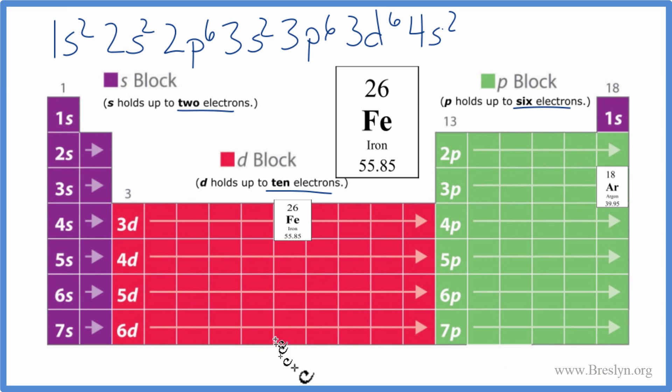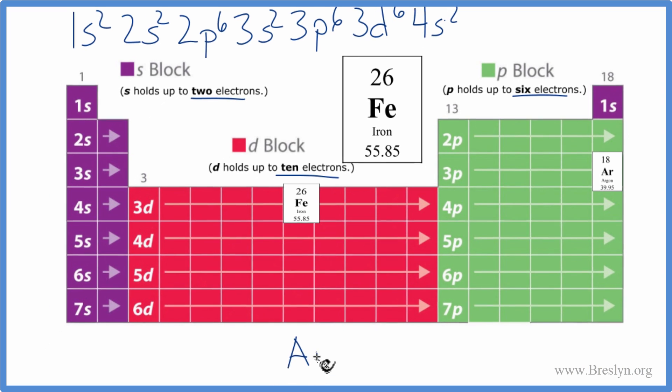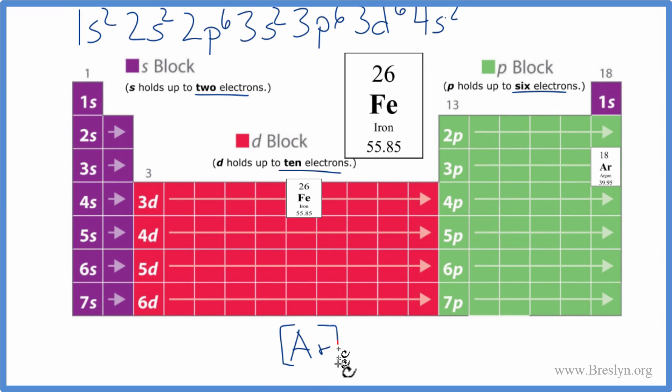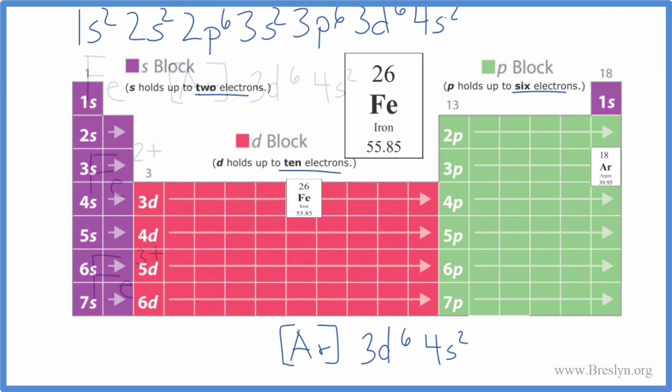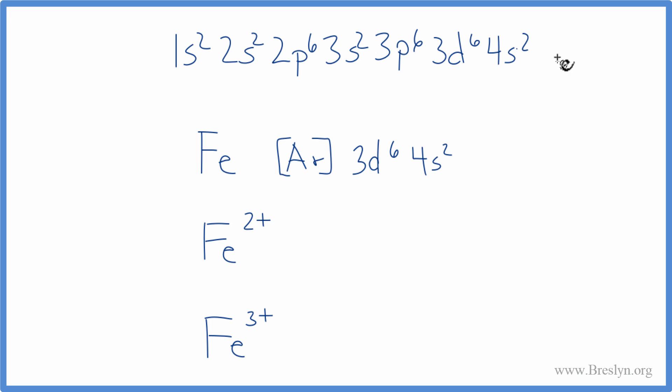So we have our argon here, and we're going to write Ar and put brackets around it. So we have everything up to Ar. Then after the Ar, we have 4s², and then 3d⁶. We said we were going to put the 4s² after the 3d⁶. Do that. And then we'll use this to write the electron configurations for Fe²⁺ and Fe³⁺. Here's our full notation for iron, and this is the condensed notation just for Fe iron.